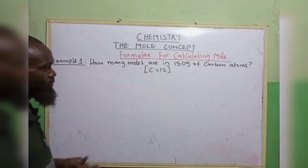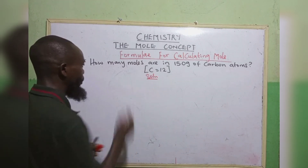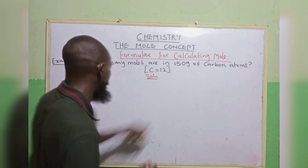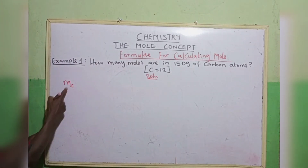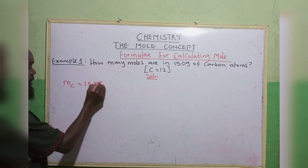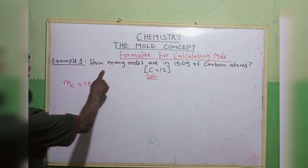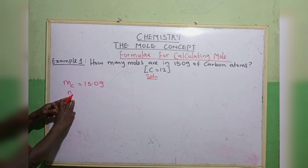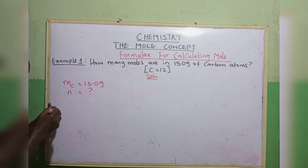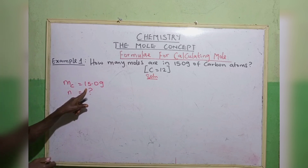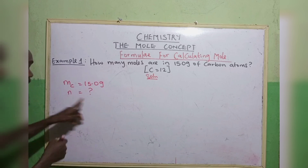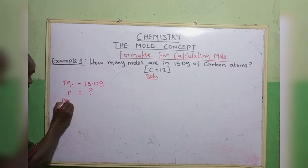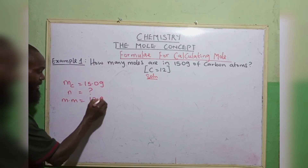How many moles are in 15 grams of carbon atom? Anything in grams means mass. So mass of carbon equals 15.0 grams. How many moles means we want to find n. Number of moles is unknown. Our mass is 15.0 grams, molar mass of carbon is 12 grams per mole. We use formula 1: amount equals to mass over molar mass.